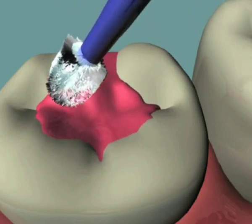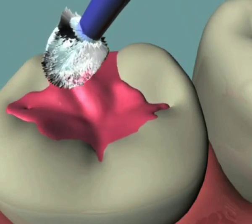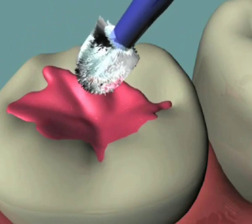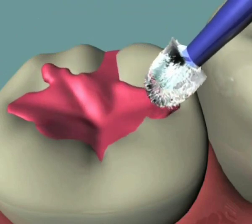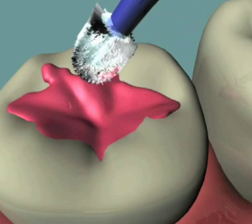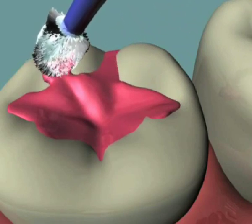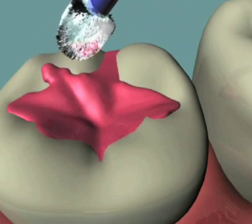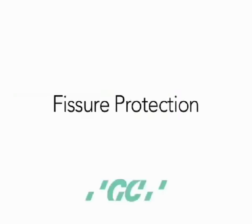Of special focus is the protection of exposed enamel surfaces on erupting first and second permanent molars. These teeth are at their highest risk of caries during the 12- to 24-month period of eruption. This procedure, often undertaken in situations where moisture control is difficult, is called fissure protection.